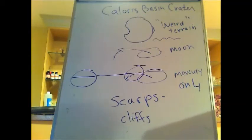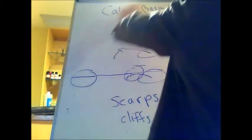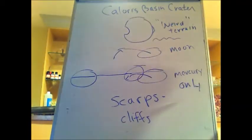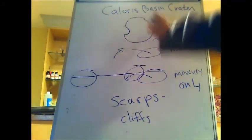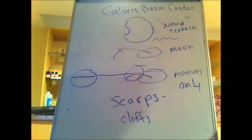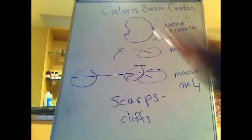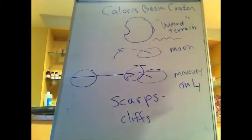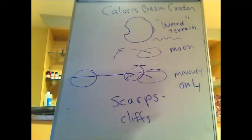The Moon has a very thick lithosphere — about 1,000 kilometers in thickness — which is the rocky outer part. The crust, the very outside part, is about 60 kilometers thick on the Earth-facing side and about 150 kilometers on the far side of the Moon. The Moon may have a molten core, but it's probably a pretty small one.